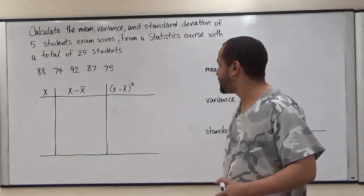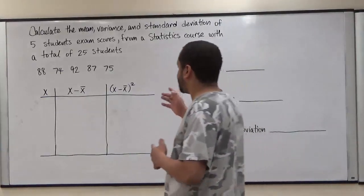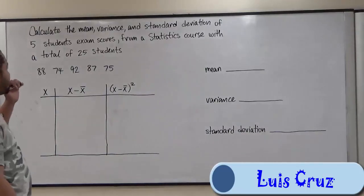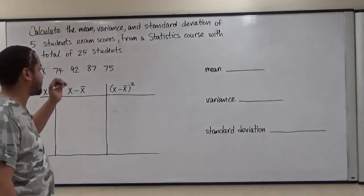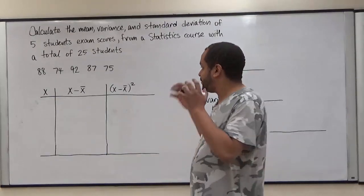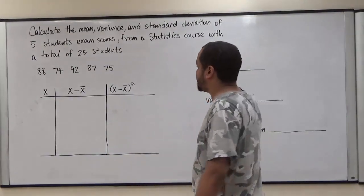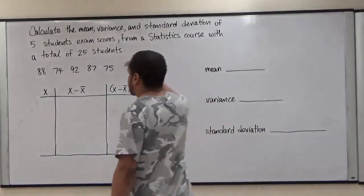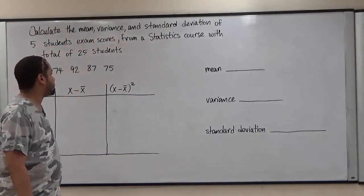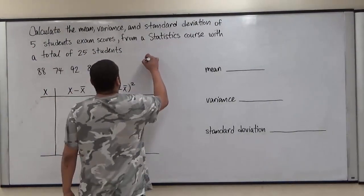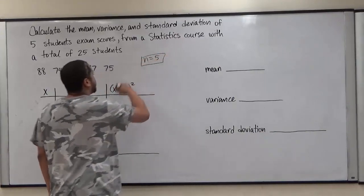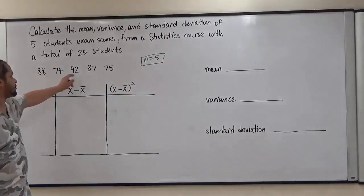Welcome to HelpYourMath.com. In today's video we're going to be calculating the mean, variance, and standard deviation of five students' exam scores from a statistics course with a total of 25 students. The key words in this problem are that we're using just five students as a sample from a class of 25, so our number of elements is n equals five.